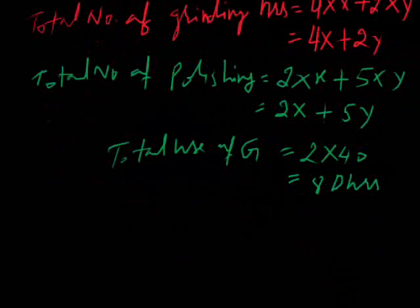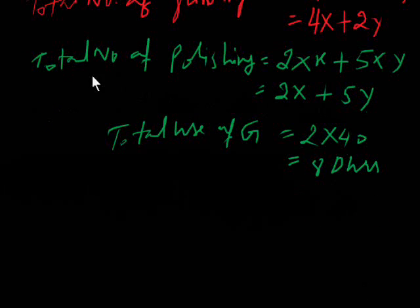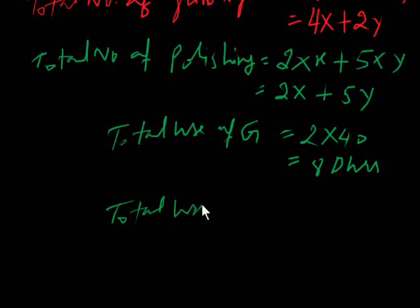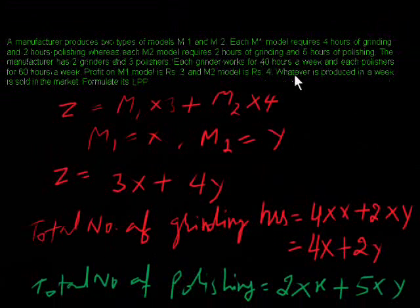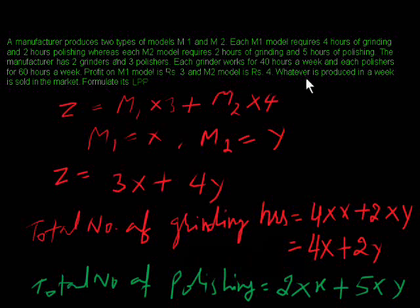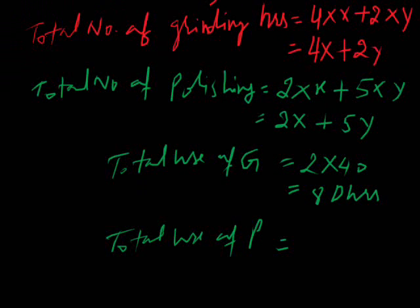The polisher is also a machine. For the total use of the polisher, we have 3 polishers and we can use each for 60 hours. So 3 times 60 equals 180 hours total for polishing per week.